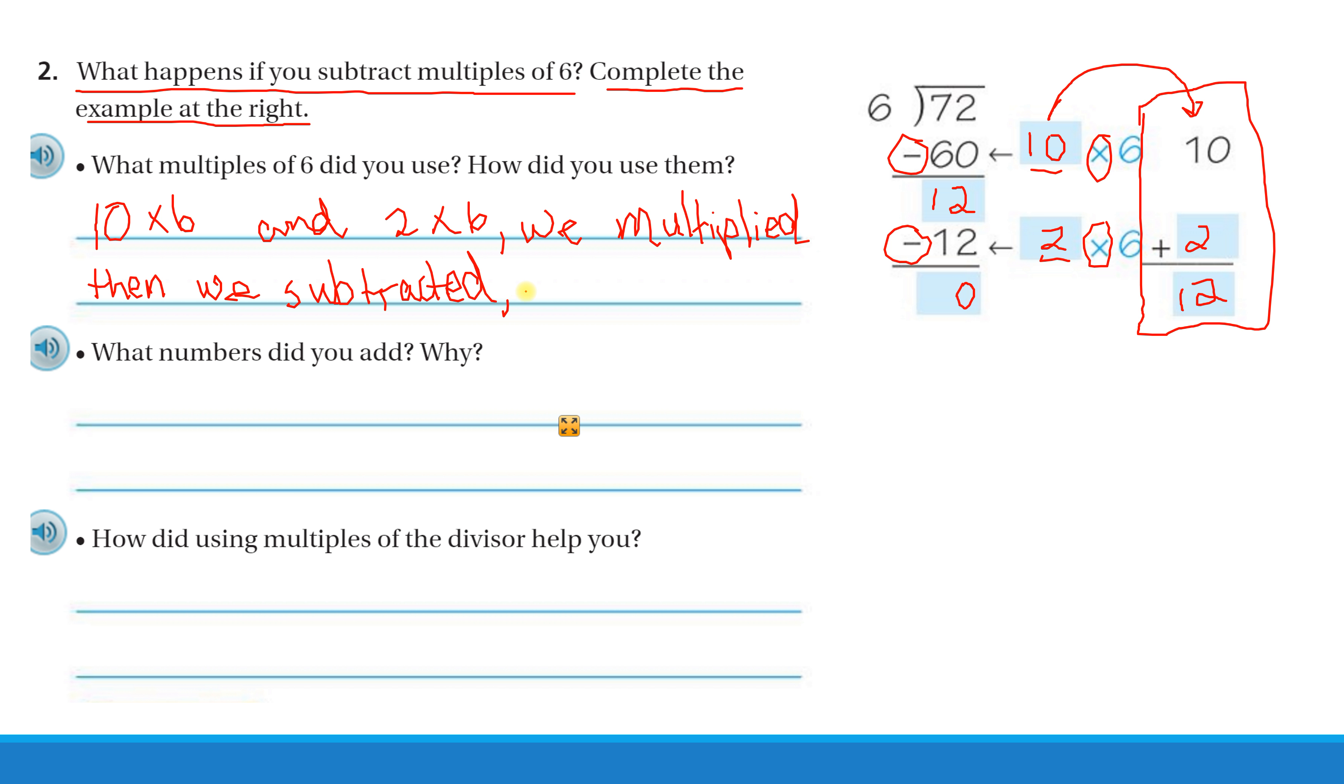to get us 0. And finally, we added, and this is a symbol for number, the number of multiples we used. So we used 10 multiples of 6, 2 multiples of 6, we added those to get our 12 multiples of 6, or 6 times 12, which gives us 72, which puts us back to our divisor. So up here in our problem, we end up with 12 for the quotient, and 6 times 12 will give us back to our dividend of 72. What numbers did you add and why?